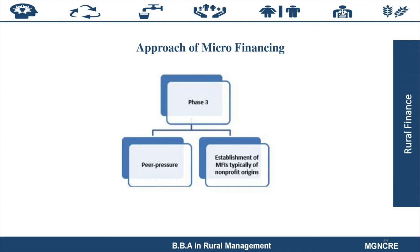We will start considering from Phase 3, being the time from which the SHG group started to develop and which ultimately culminated into the formation of formal structural MFIs. Phase 3 could be divided into two groups: the peer pressure through self-help groups, and the establishment of MFIs typically of non-profit origins.